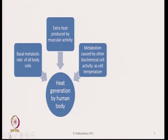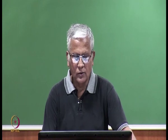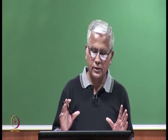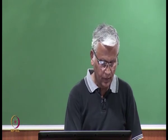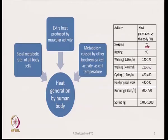Another source of heat is produced by muscular activity. If we walk, run, or do some physical work, we generate additional heat. The other source is metabolism caused by other biochemical cell activity. These are the basic sources of heat. Different activities and the corresponding heat the body generates are listed — sleeping generates around 70 watts, resting around 90 watts, and activities like walking, cycling, and hard physical work generate progressively more.